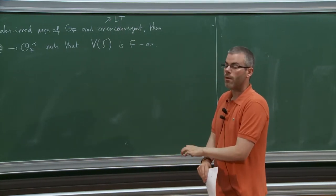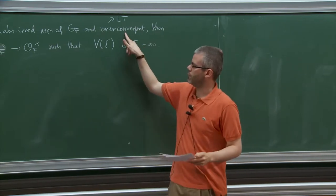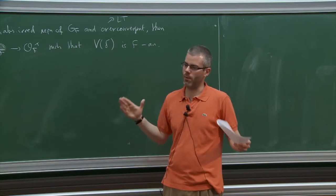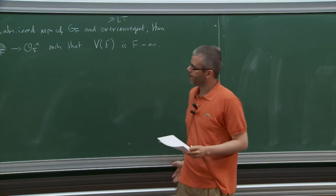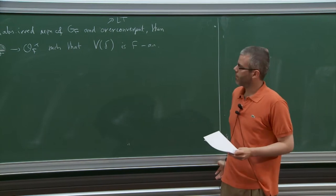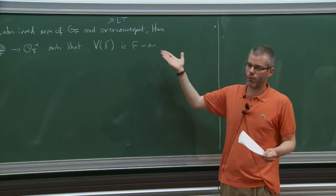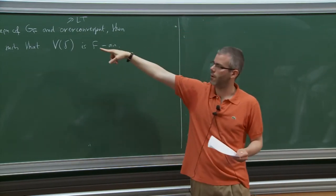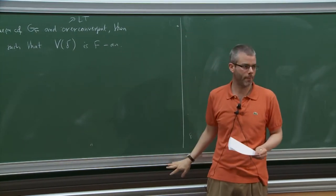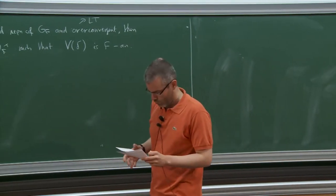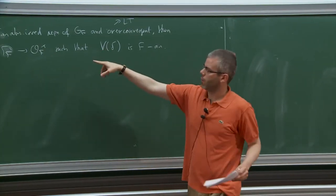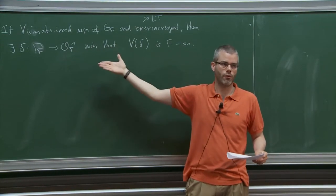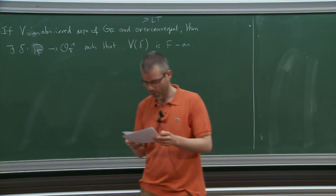The converse — if V is F-analytic, then V is overconvergent — is not a theorem, it's a conjecture. I think that with a bit of extra work, you can drop the irreducibility condition and get a complete characterization of overconvergent representations, but I haven't gotten to that yet.